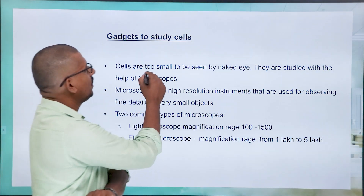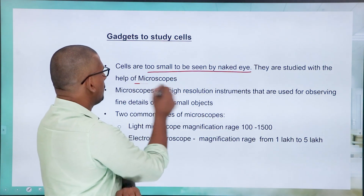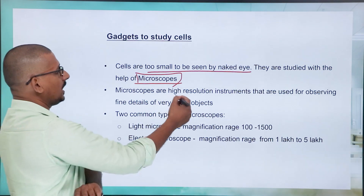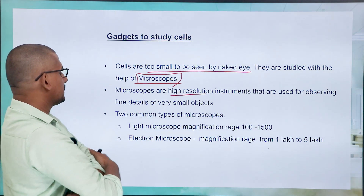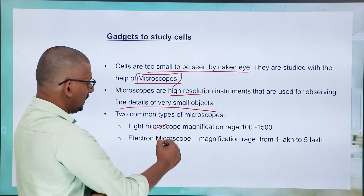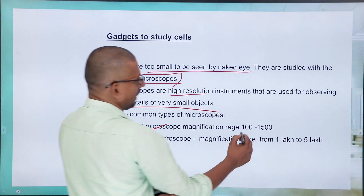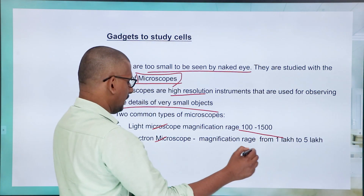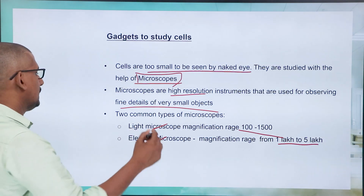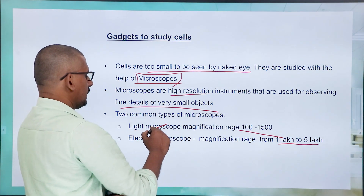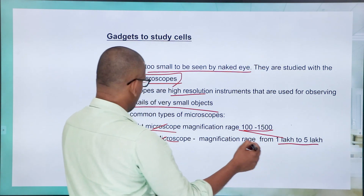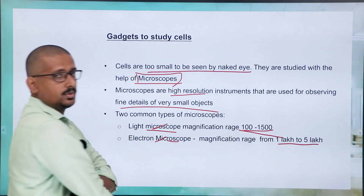Cells are too small to be seen by the naked eye. They are studied with the help of microscopes, which are high-resolution instruments used for observing fine details of very small objects. Two common types are the light microscope and the electron microscope. The magnification of the light microscope is 100 to 1500, while the electron microscope is 1 lakh to 5 lakh.